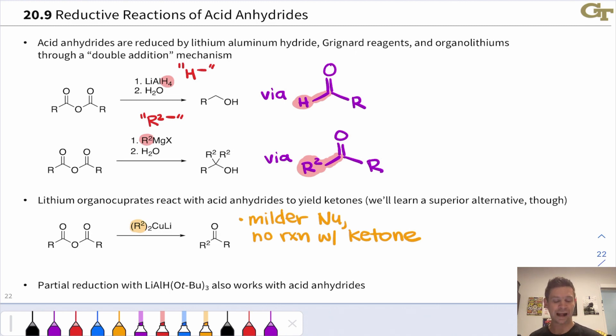Partial reduction of anhydrides to aldehydes also works using lithium triacetoxy aluminum hydride. This gives the aldehyde from the starting anhydride, where essentially H- displaces a carboxylate leaving group.